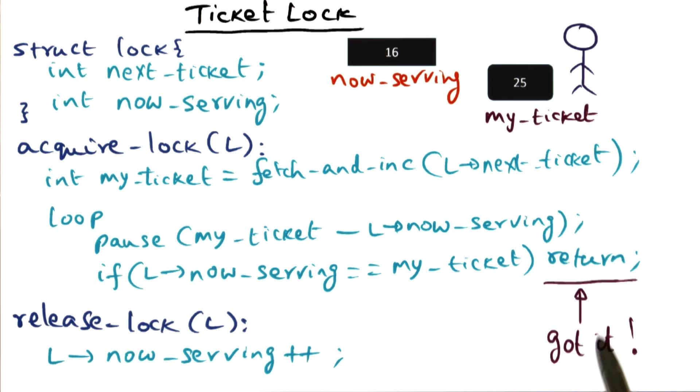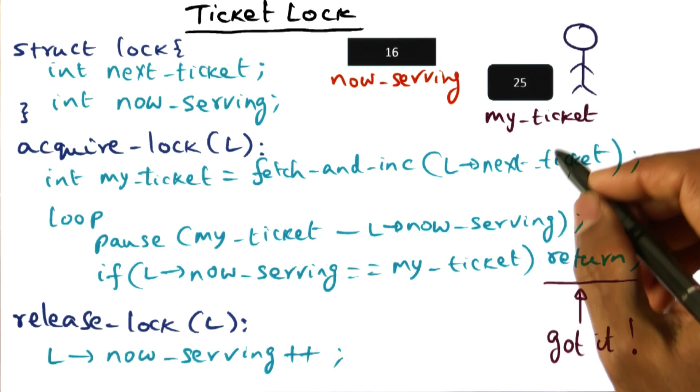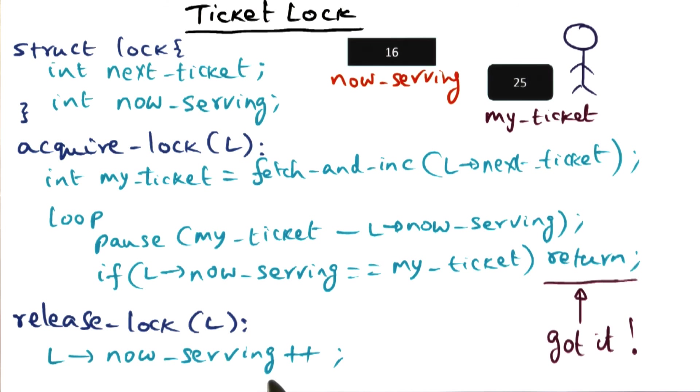Now this algorithm is good that it preserves fairness. But you notice that every time the lock is released, this now serving value that is in my local cache is going to be updated by the cache coherence mechanism. And that's going to cause contention on the network. So on the one hand, fairness is achieved. But on the other hand, we've not really completely gotten rid of the contention that can happen on the network when the lock is released.